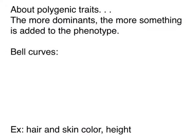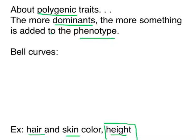Polygenic traits: the more dominant alleles you have, the more something gets added to the phenotype. On our baby lab, your baby's hair color and skin color were both controlled by polygenic traits — those are prime examples. Another good one is human height. The more dominants you have, the taller you're going to be, so the dominant alleles are adding height to the phenotype.